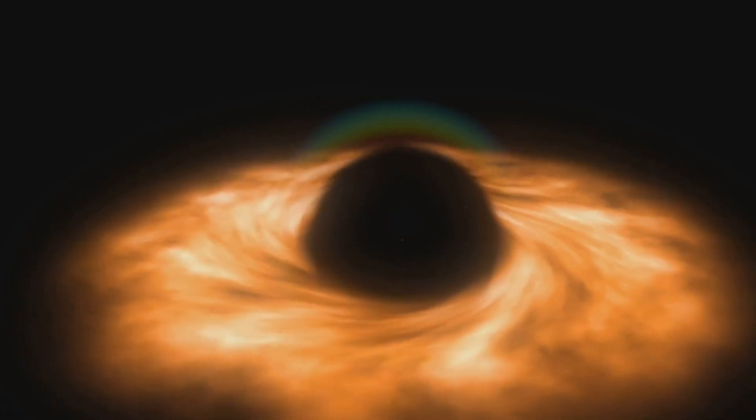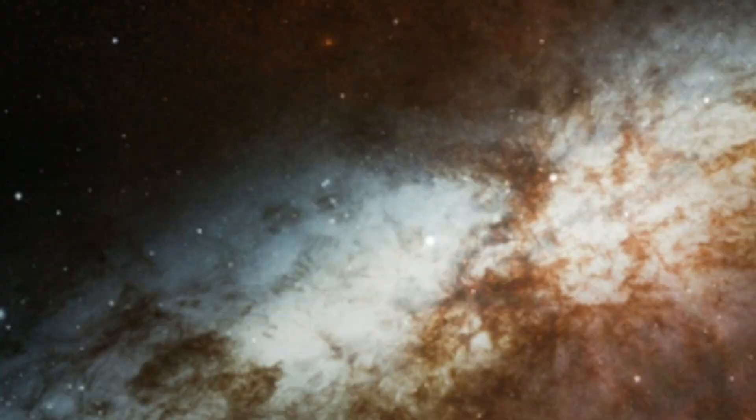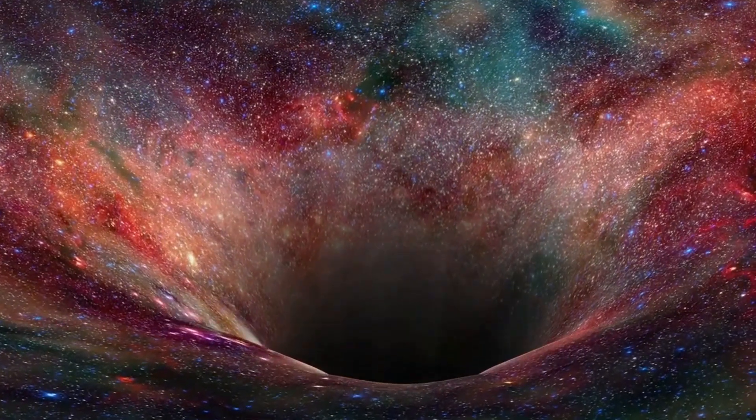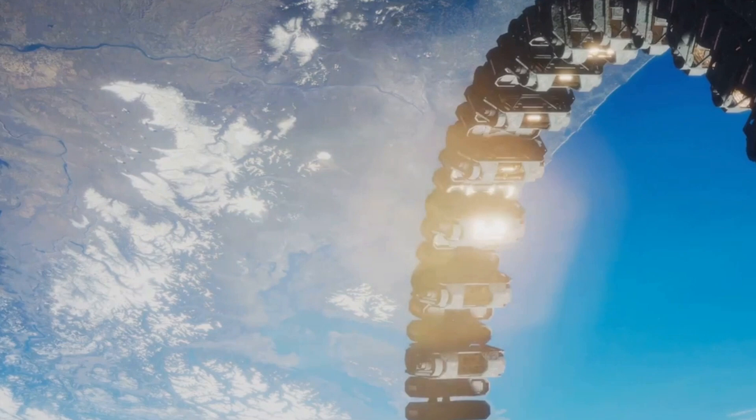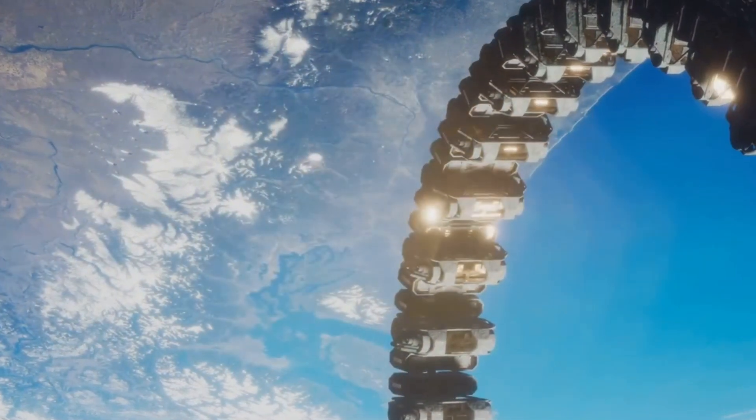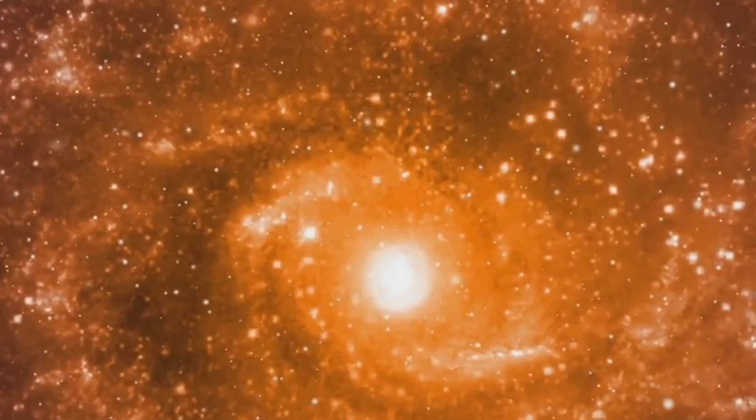It might seem counterintuitive to think that the lowest mass black holes in the universe curve space more severely than the supermassive behemoths that populate the centers of galaxies, but it's true. Curved space isn't just about how much mass you have all in one place, because what you can observe is limited by the presence of an event horizon.